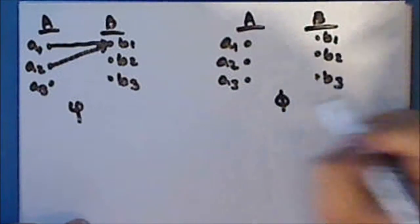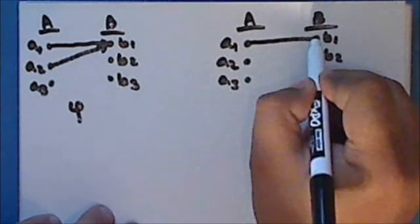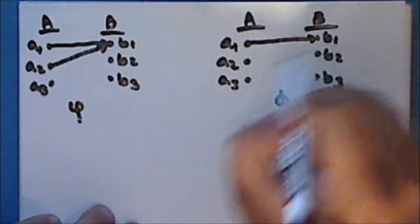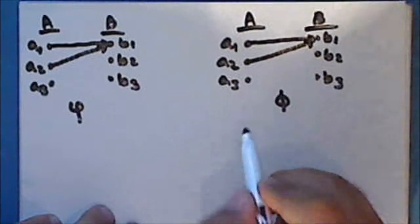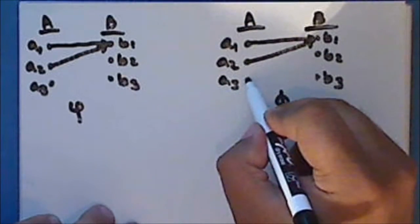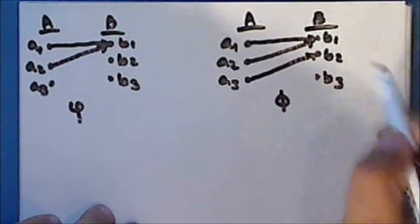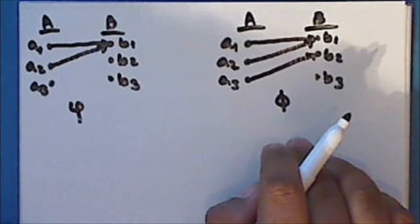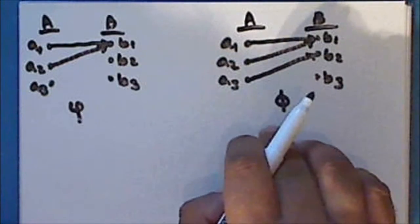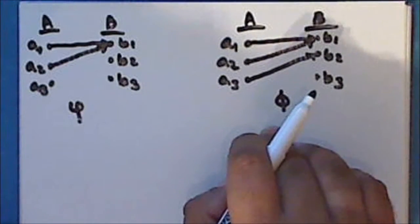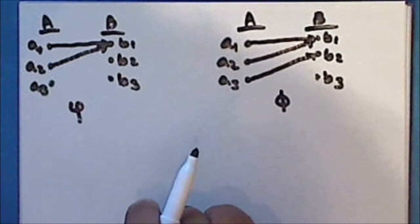Now the typeface φ also maps the element a₁ onto the element b₂. And so this is a function from A into B, since the domain of the function typeface φ is the entire set A.